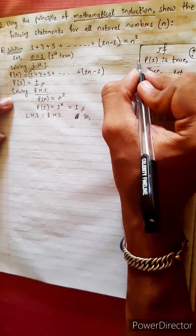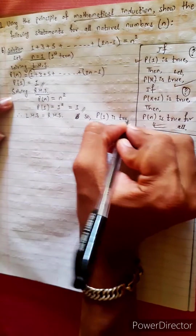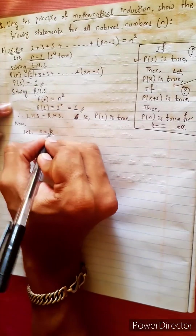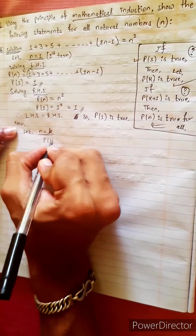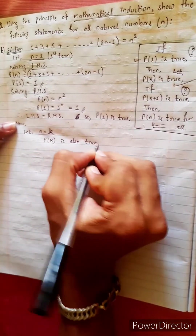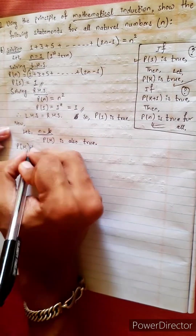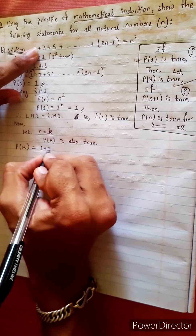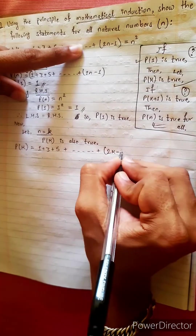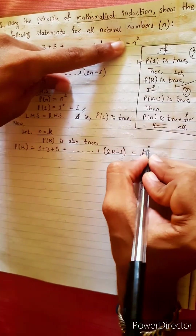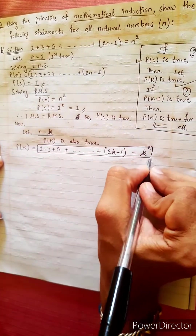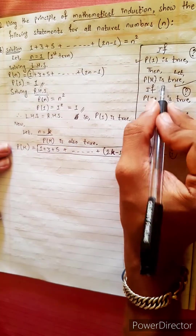So P1 is true. Now let n equal k. Assume Pk is also true. The Pk value is equal to 1 plus 3 plus 5 plus dot dot dot plus 2k minus 1, equals k squared. This assumption is important — Pk is true.